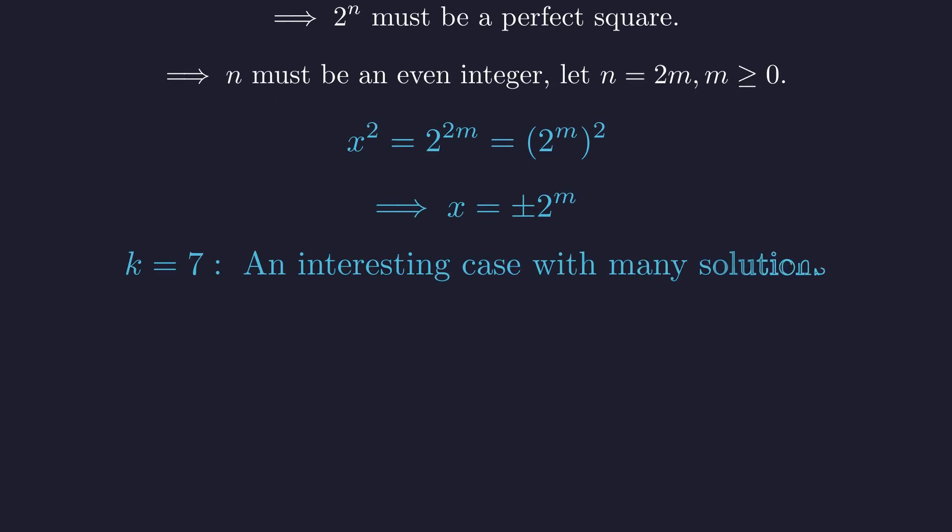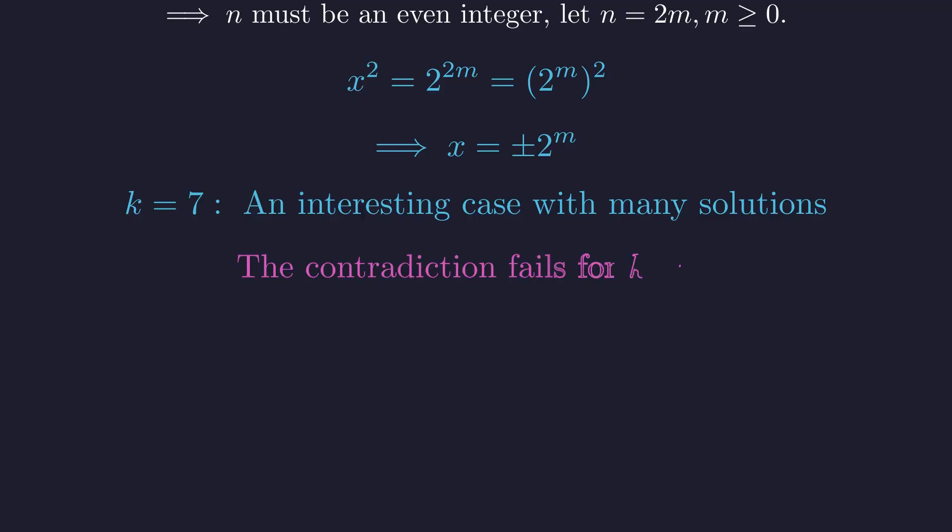For k equals 7, the equation behaves quite differently than for k equals 3. The key difference is in the modular arithmetic. Our mod 8 contradiction hinged on getting x squared congruent to 5. Let's see what happens for k equals 7.